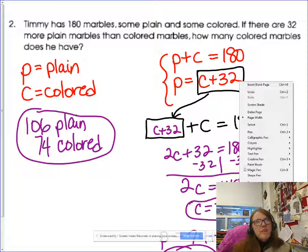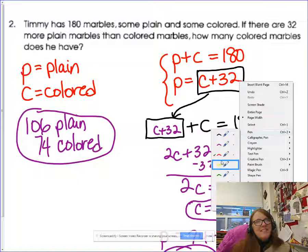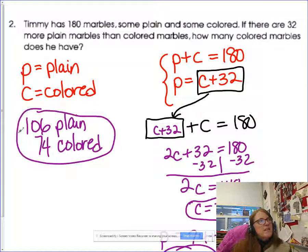Let's jump to the marble one. Here's what I end up with. You should get 106 plain ones and 74 colored ones. They actually ask for how many colored marbles does he have, so to truly answer it, you get 74, but you had to go through and find both of them. When it says you have a total, that first sentence right here, your first equation is add the two together and get 180.